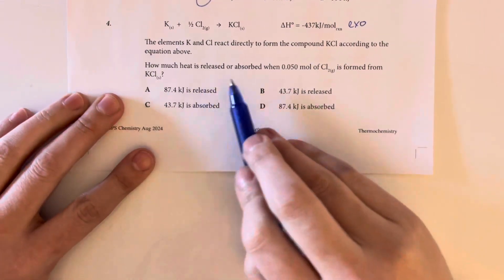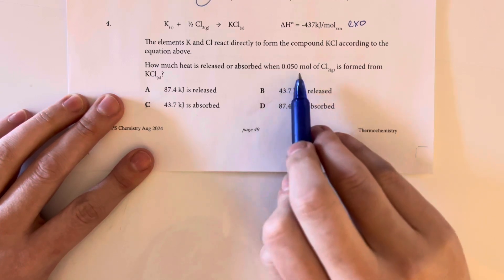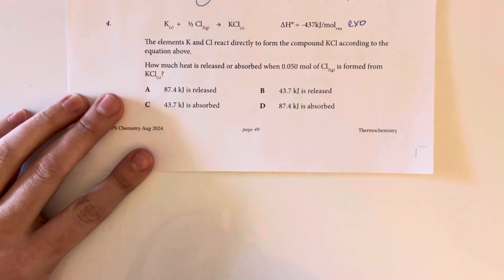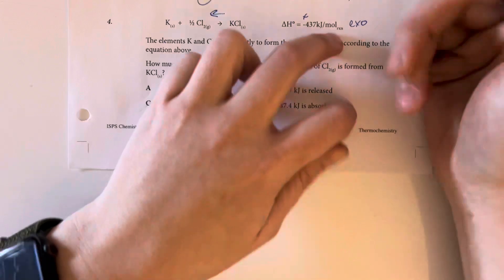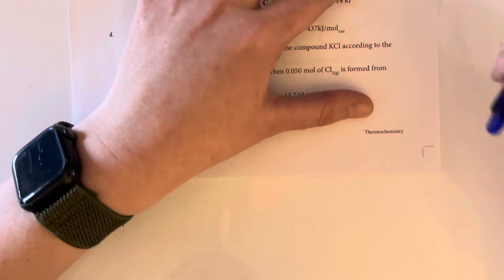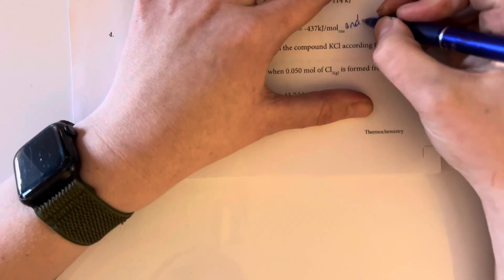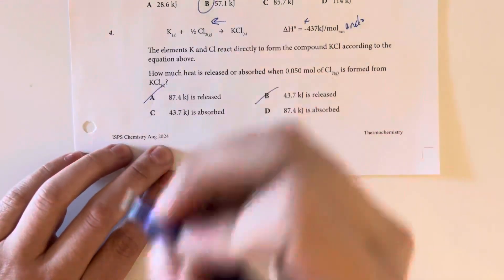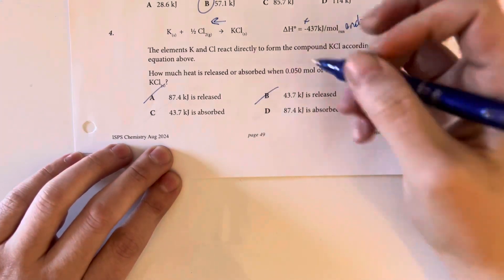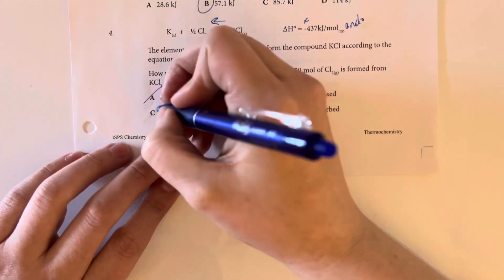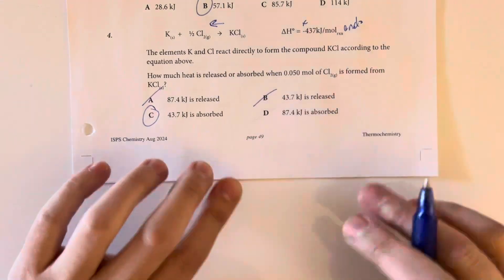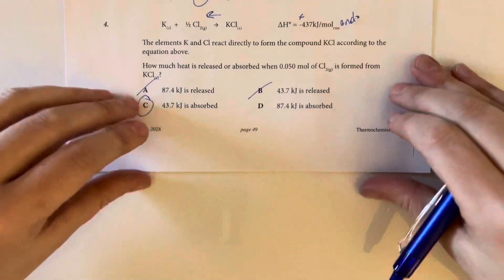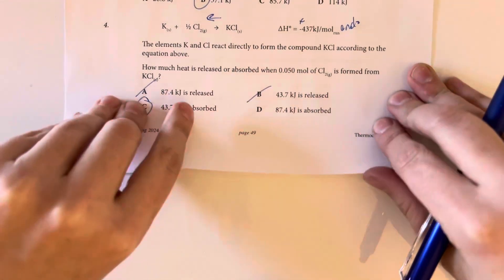I realized that this is actually going in the forward reaction, but our problem is going in the opposite direction, which means that the sign is now positive. So this is endothermic since we are going in the reverse direction — we are actually absorbing that heat. A tenth of the delta H gives us 43.7 kilojoules, and that is absorbed because we are going in the reverse direction and therefore absorbing rather than releasing heat.